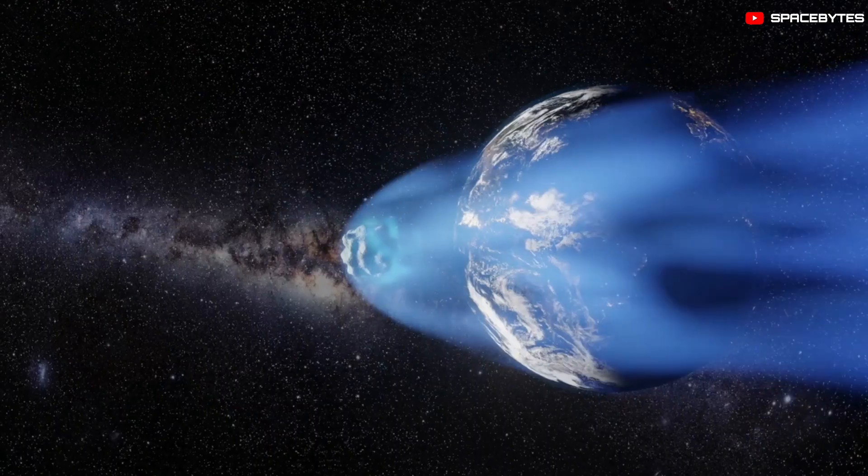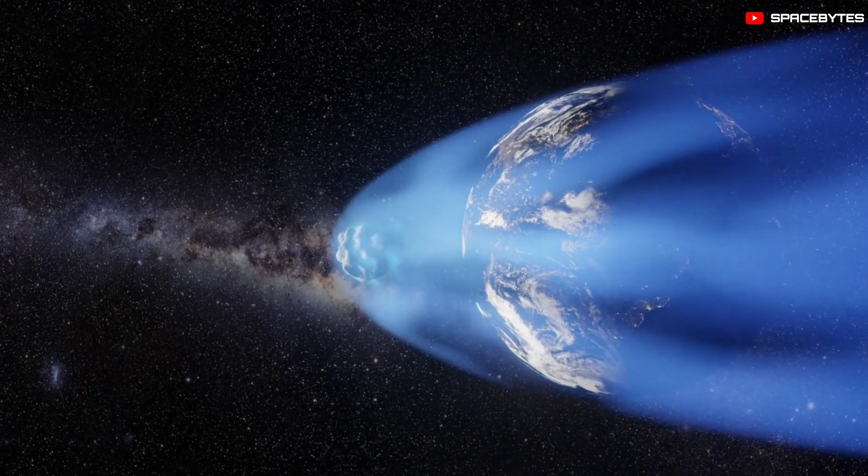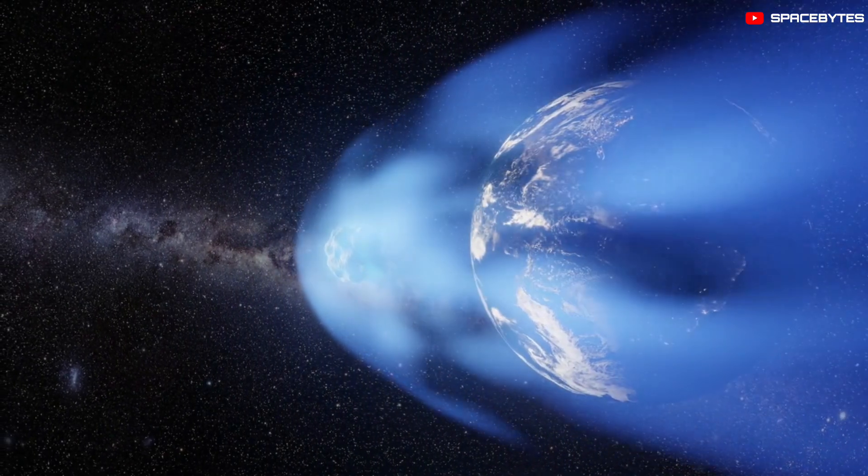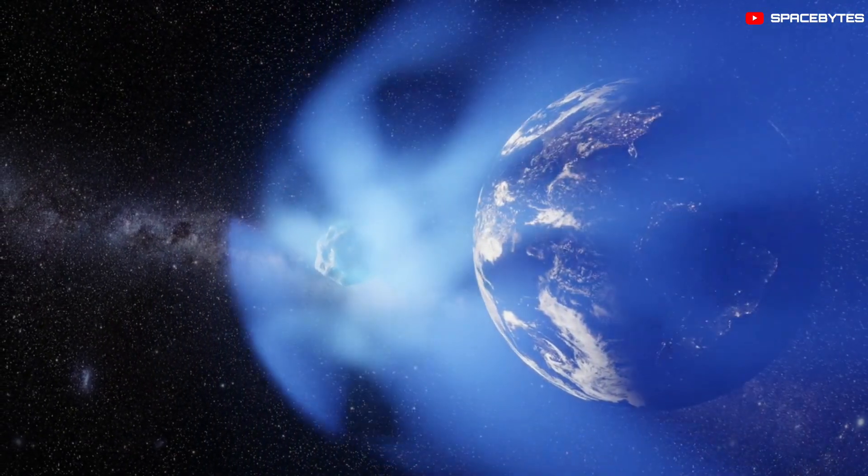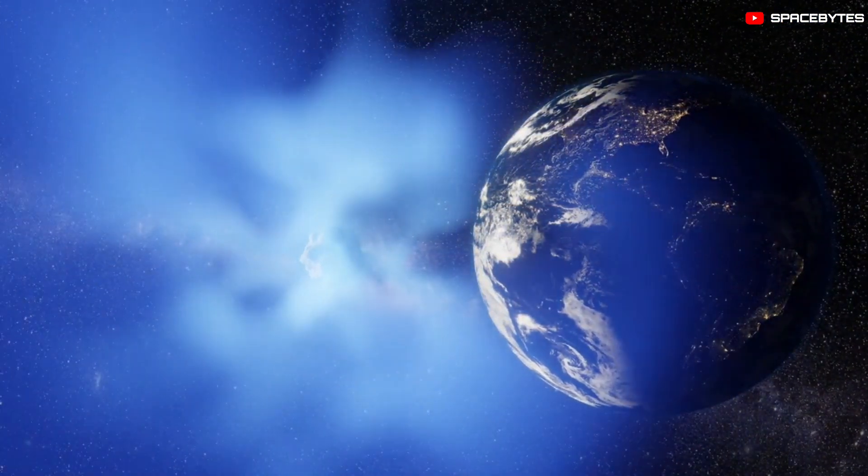They're filled with ices that start to sublimate when the comet gets close to the sun, generating a dusty, misty atmosphere also called a coma, and the famous cometary tails.